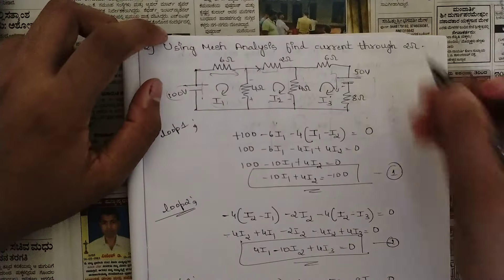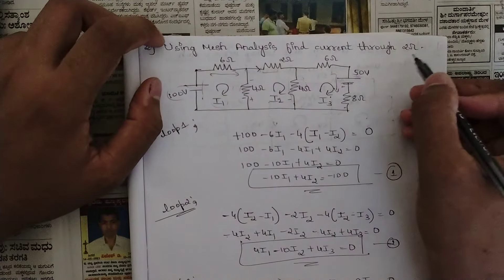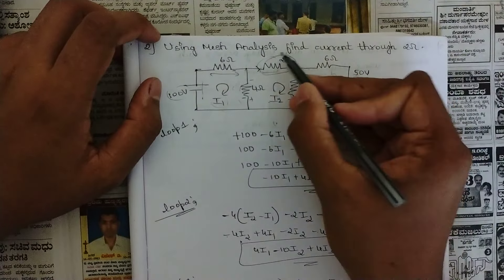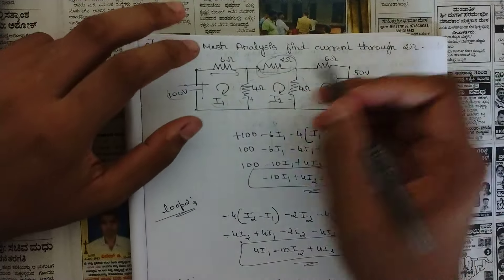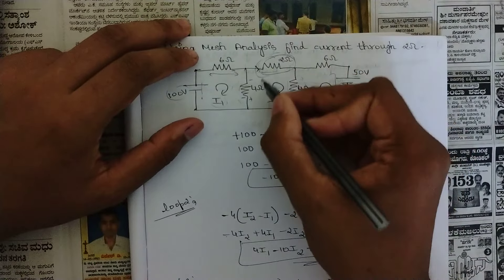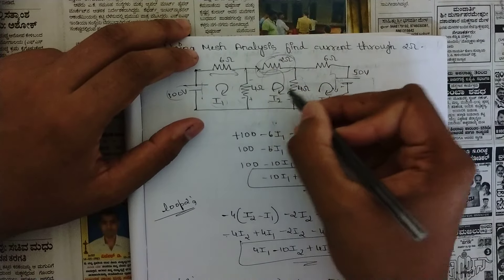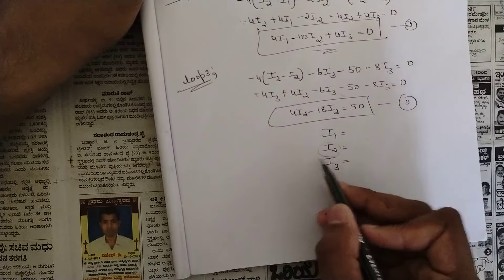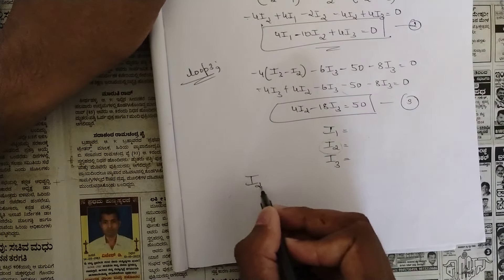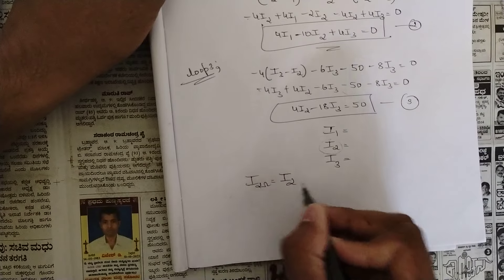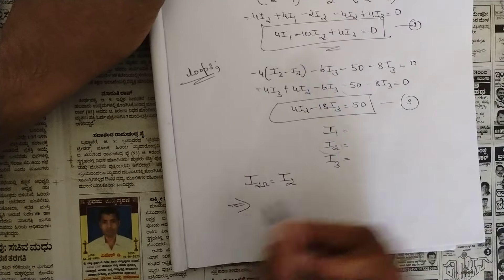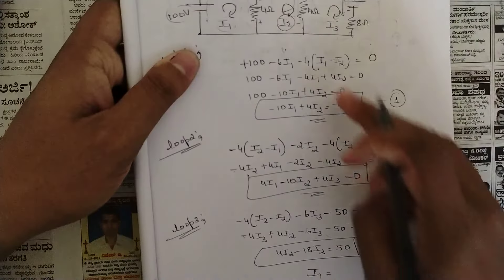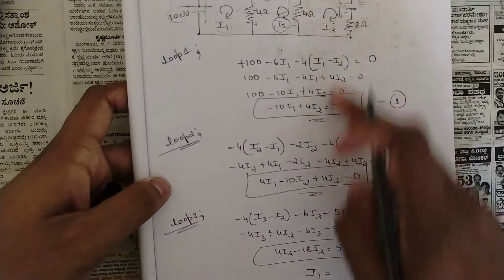The question asks for the current through the 2 ohm resistor. This 2 ohm resistor is not between any two loops — it lies entirely in loop I2. Therefore, whatever value of I2 we get, that is the current through the 2 ohm resistor.